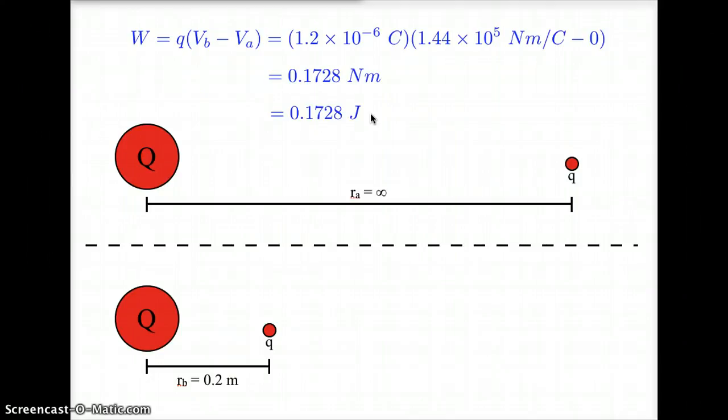As expected, the work value is positive, so it looks like all the math worked out correctly. It took effort on my behalf to move the two charges closer together because they were both positive and repelling each other.